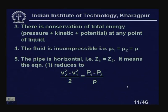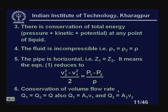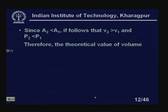With these assumptions, Bernoulli's equation reduces to (V2² - V1²)/2 = (P1 - P2)/ρ. Conservation of volume flow rate gives Q1 = Q2 = Q, where Q1 = A1·V1 is the upstream volumetric flow rate and Q2 = A2·V2 is the downstream volumetric flow rate. Since A2 < A1, it follows that V2 > V1, and P2 < P1.